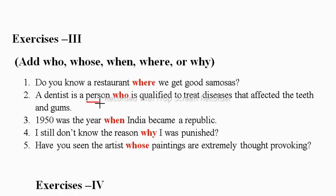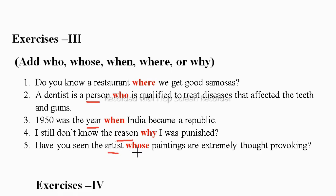1950 was the year when India became a republic — we are talking about a time period (year), so we take 'when'. Next: I still don't know the reason why I was punished — for reasons we take 'why'. Next: Have you seen the artist — blank — paintings are extremely thought-provoking? We are talking about the artist's paintings, so for possession in relative clauses we take 'whose'.